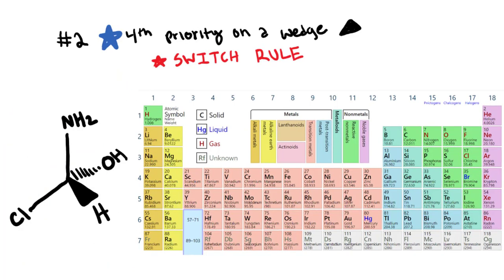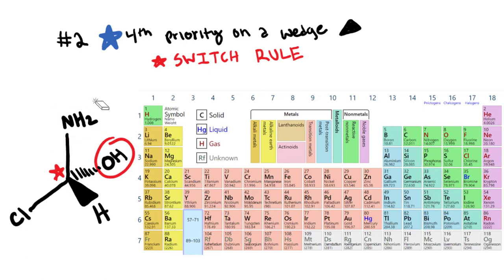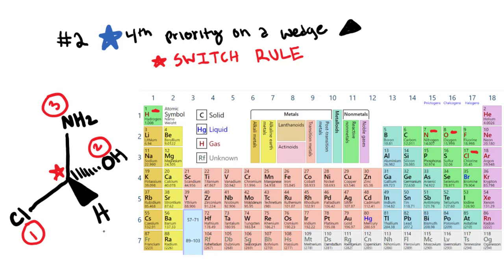In the second scenario, we have the fourth priority group on a wedge. First, assign priorities. Some groups attached to the chiral center have more than one atom — for example, NH2 or OH — but we're only looking at the atom directly attached to the chiral center. For NH2, look up nitrogen; for OH, look up oxygen. Assigning priorities: chlorine is first at 17, oxygen is second at 8, nitrogen is third at 7, and hydrogen is fourth at 1.